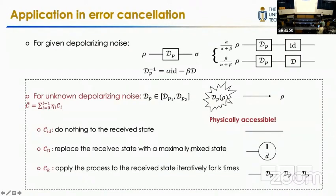Let's see some applications. The first is a direct application in error cancellation. Previously, probabilistic error cancellation required knowing the noise level p. Here, using the virtual comb technique, we can cancel depolarizing noise in a given region without needing to know the exact noise level.